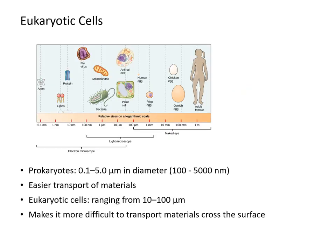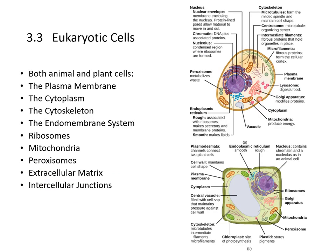Prokaryotes are typically 0.1 to 5 micrometers in diameter — about 100 to 5,000 nanometers — so they face easier transport of materials within the cell. But eukaryotes range from 10 to 100 micrometers, making it more difficult to transport material across the surface using diffusion only. So eukaryotes have many different cell parts.